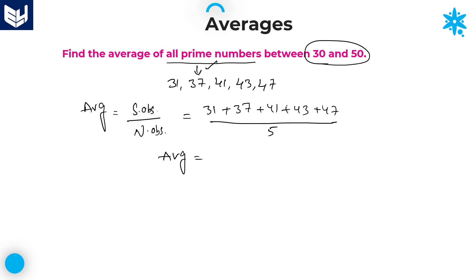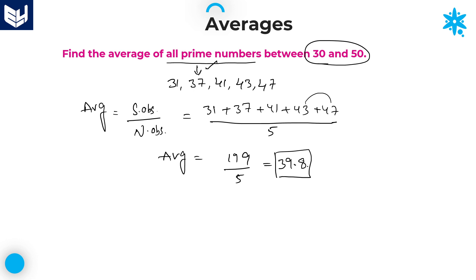Adding the values: units place — 1+7=8, +1=9, +3=12, carry 1. Tens place — 4+7=11, +4=15, +4=19, plus carry 1 gives 199. So it is 199 divided by 5. Dividing: 5 goes into 199 giving 39 remainder 4, then with decimal 40 divided by 5 is 8. The answer is 39.8. That is the required average of all prime numbers between 30 and 50.